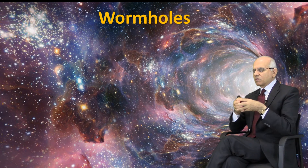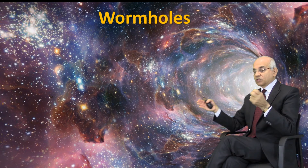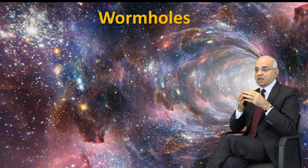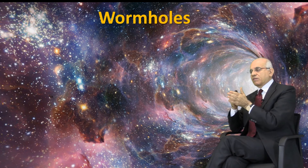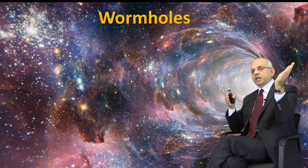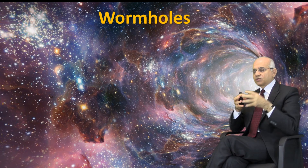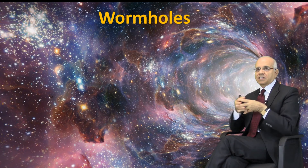Wormholes are a way that science fiction authors found for spaceships to travel from one point to another between the stars without taking forever. Because the distances between stars are in the dozens or hundreds of trillions of kilometers, it's not really practical with our current technology to travel from one star to another. For example, if we wanted to go to our nearest star, Alpha Centauri, it would take about 50,000 years with today's technology.